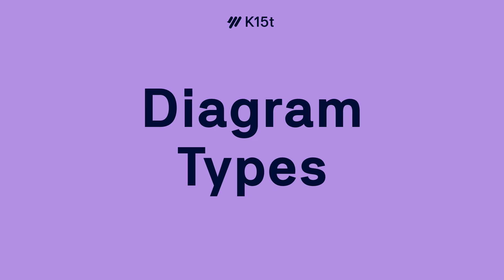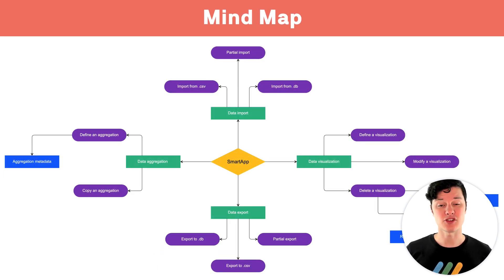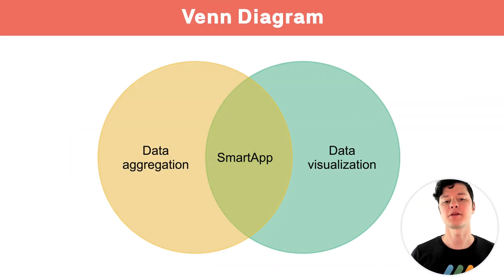As you start to make your diagram, you should be aware that there are already a lot of predefined types, so maybe you can pick one that someone has put a lot of thought into to illustrate the type of concept or process you're looking to explore. Consider some of these: when you're explaining a process, use a flow diagram; when you're brainstorming ideas, use a mind map; when you're comparing information, use a Venn diagram.